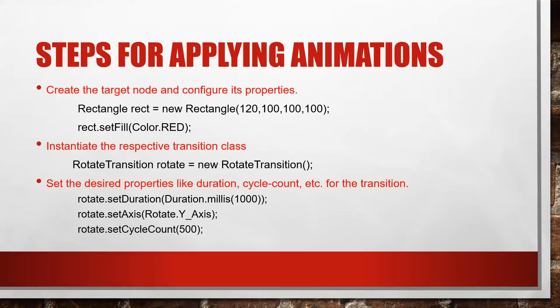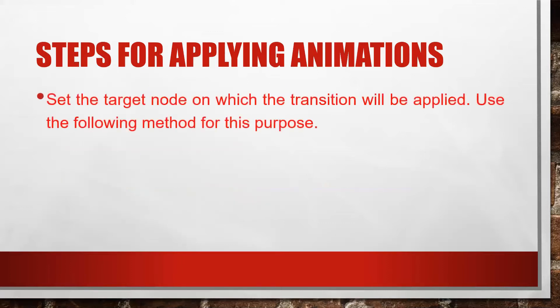After setting duration, specify the rotation axis using setAxis — for example, Y axis — and set the cycle count, which is how many times the object rotates. You can change setCycleCount to 2 if you want it to rotate only two times. Next, set the target node on which the transition will be applied using rotate.setNode(), which refers to the rectangle — the specific node to be animated.